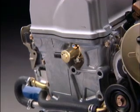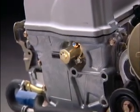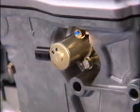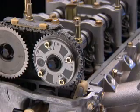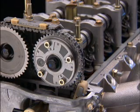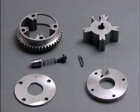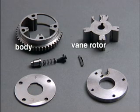The VTC consists of the VTC oil control valve installed in the cylinder head and a hydraulically controlled VTC actuator mounted on the end of the intake camshaft. The VTC actuator includes a body and a vane-type rotor that indexes to the camshaft.